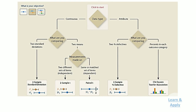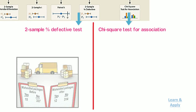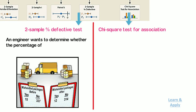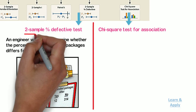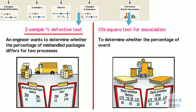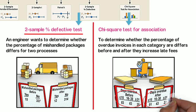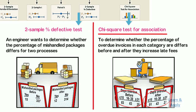If the data is attribute, the second selection criteria is: what are you comparing? If you are comparing percentage defectives in two samples, use the two-sample % defective test. If you want to compare percentage in each outcome category across two samples, use the chi-square test for association. For example, if an engineer wants to determine whether the percentage of mishandled packages differs for two processes, then use the two-sample % defective test. Whereas if an analyst wants to determine whether the percentage of overdue invoices in each category — such as 15 days or less, 16 to 30 days, and more than 30 days — differs before and after they increase the late fees, then use the chi-square test for association.